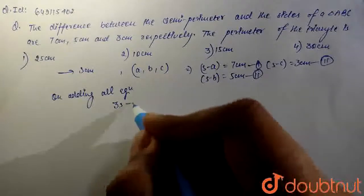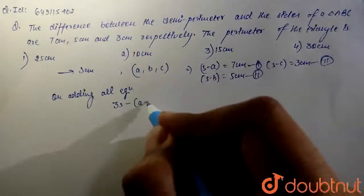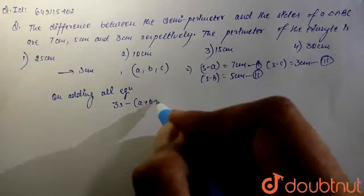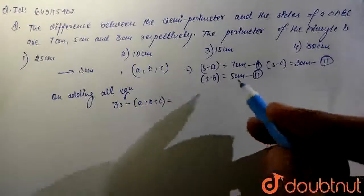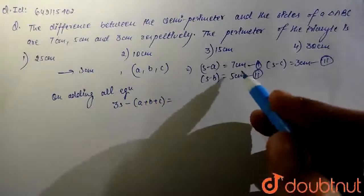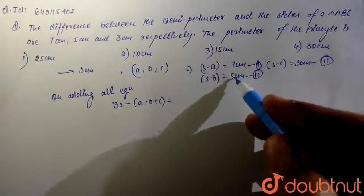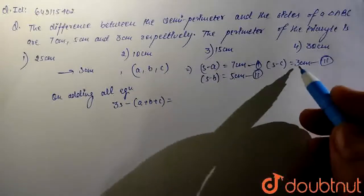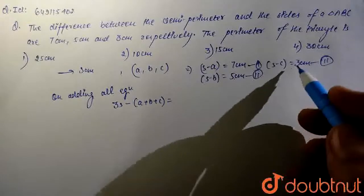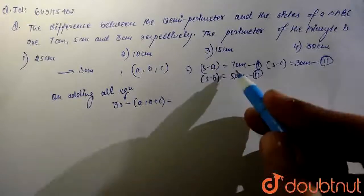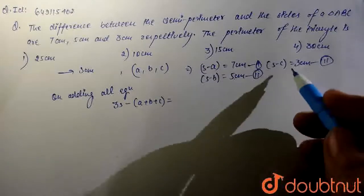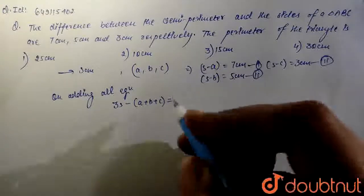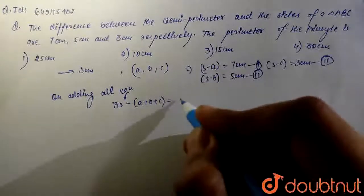Adding all three equations: (S minus A) plus (S minus B) plus (S minus C) equals 7 plus 5 plus 3 on the RHS, which gives us 3S minus (A plus B plus C) equals 15.